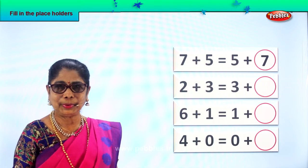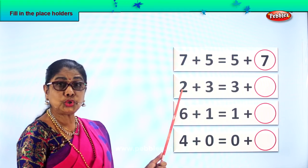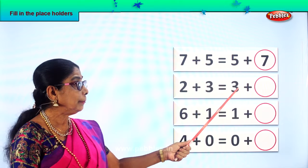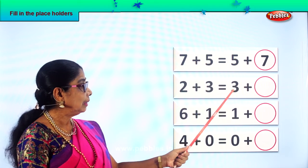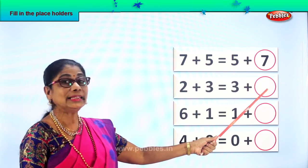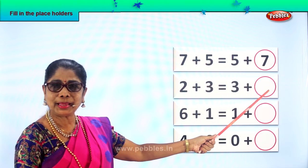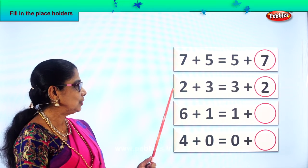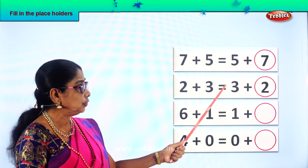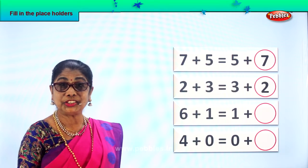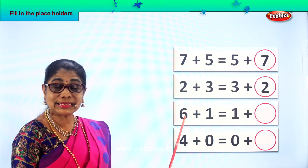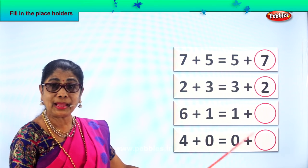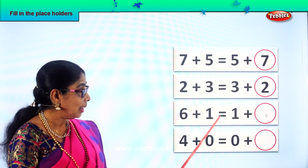How do you know? Seven plus five — here you have seven plus five reversed. Now you know how to fill in the placeholders. Let's look at this: two plus three. Two plus three is equal to three plus what? Number three is here but the two is missing. Certainly it is three plus two. Two plus three is equal to three plus two. Now let's look at this one: six plus one. Six plus one is equal to one plus six.